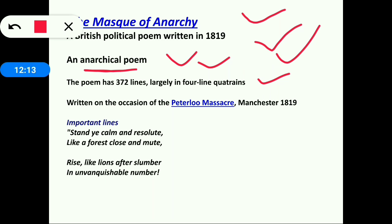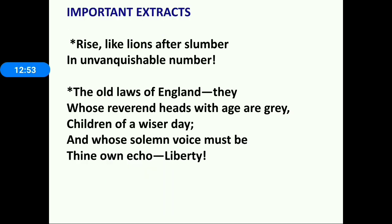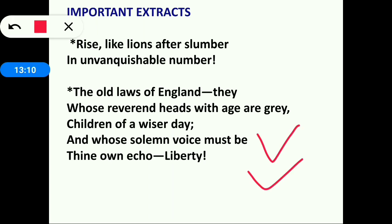The Mask of Anarchy has a touch of Mahatma Gandhi's non-violence, where people without violence wanted to revolt against the throne but failed and massacre occurred. Important lines include: 'Stand ye calm and resolute, like a forest close and mute' and 'Rise like lions after slumber in unvanquishable number.' Also: 'The old laws of England — they whose reverent heads with age are gray, children of a wiser day — thine own echo, Liberty.'